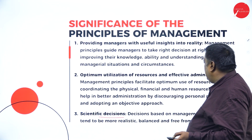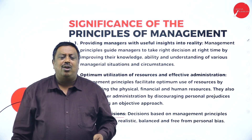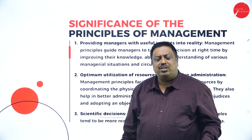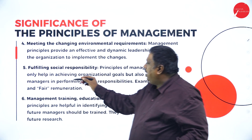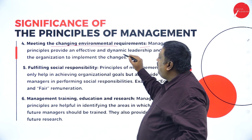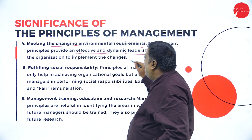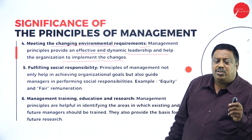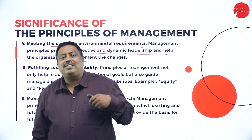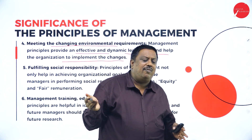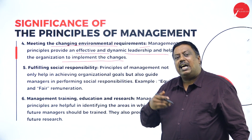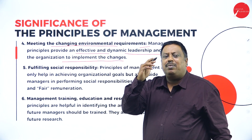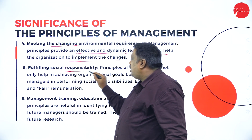The third significance is scientific decision-making — based on the formulation of things in management, making experiments and taking proper decisions on how work should be executed. The fourth is meeting changing environmental requirements: management principles provide effective and dynamic leadership and help the organization implement changes. Rules and regulations should be made in such a way that they can be changed according to future situations, so that work can be done easily and aims reached without hurdles.